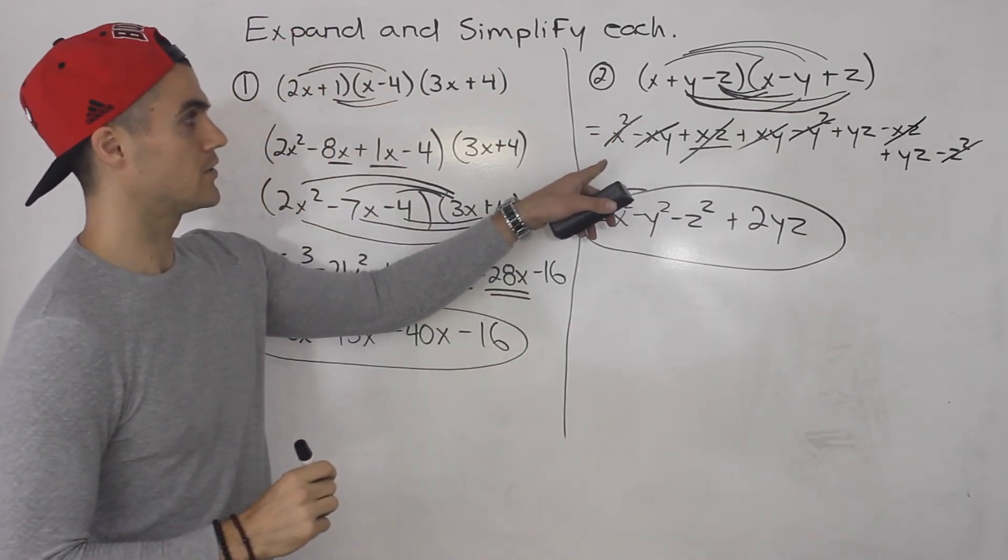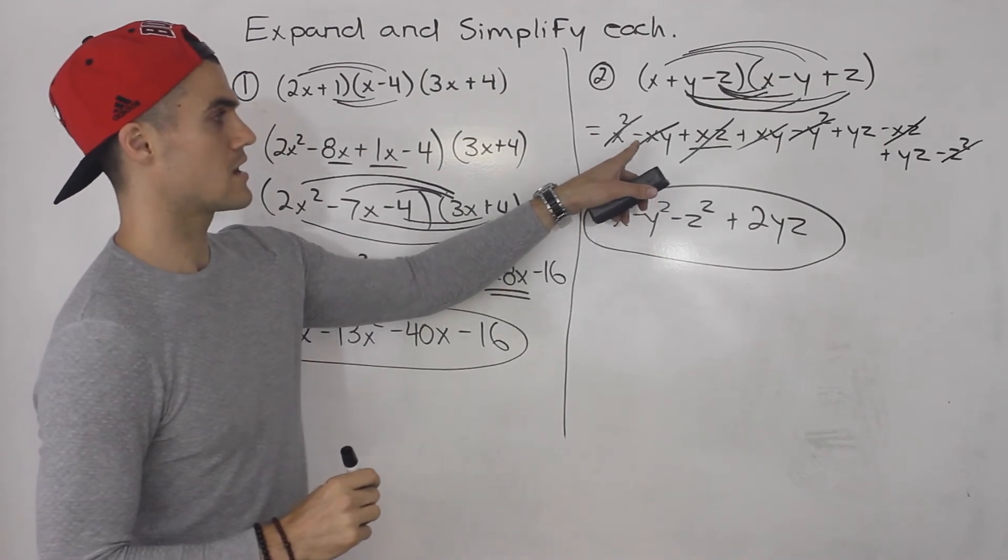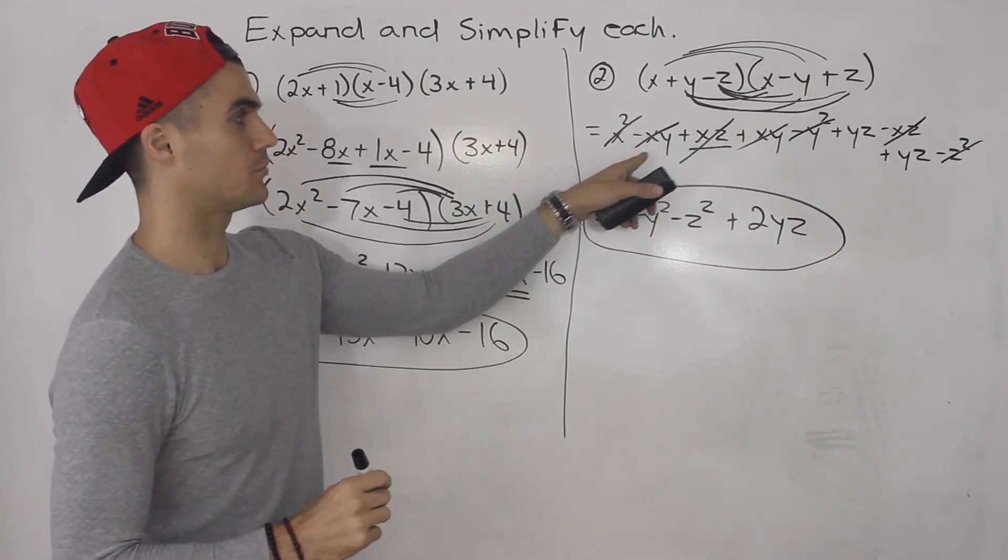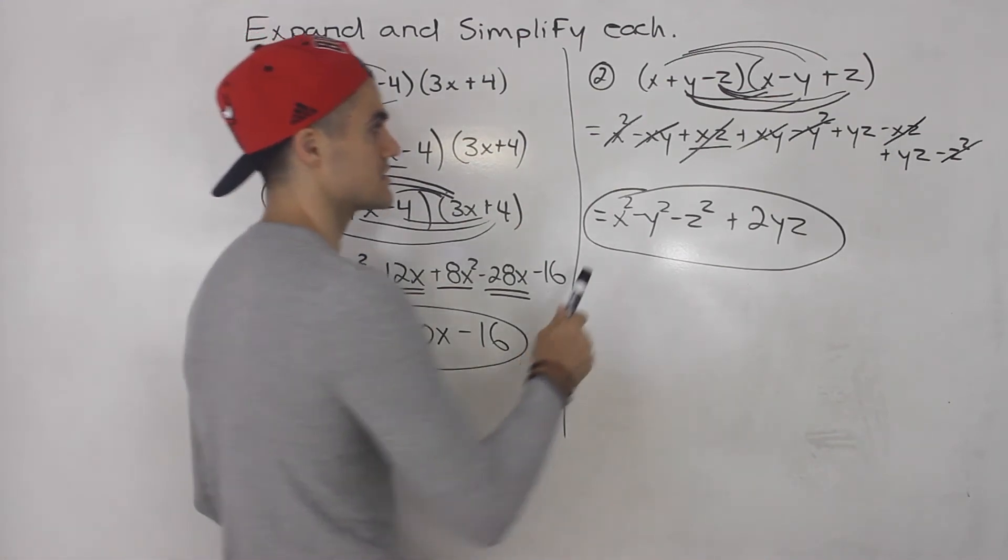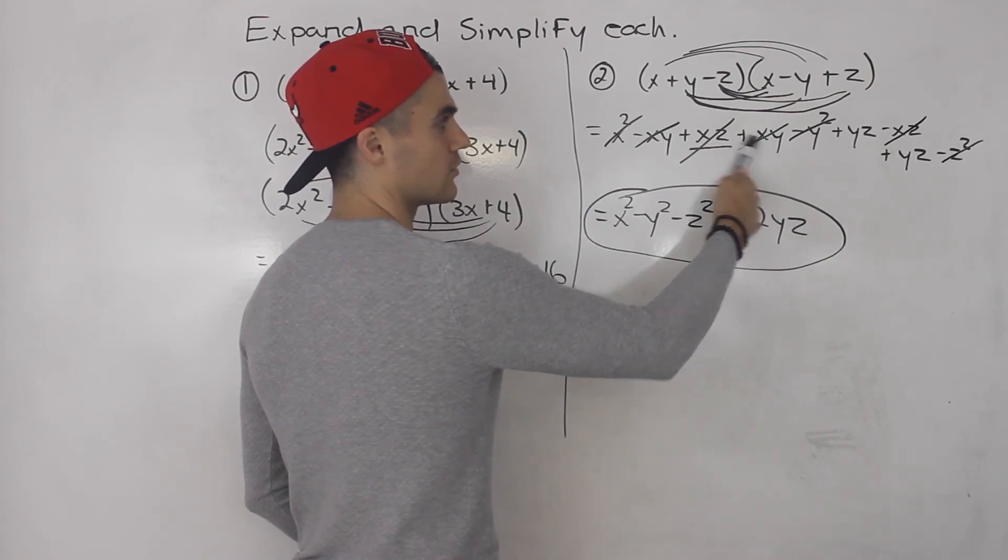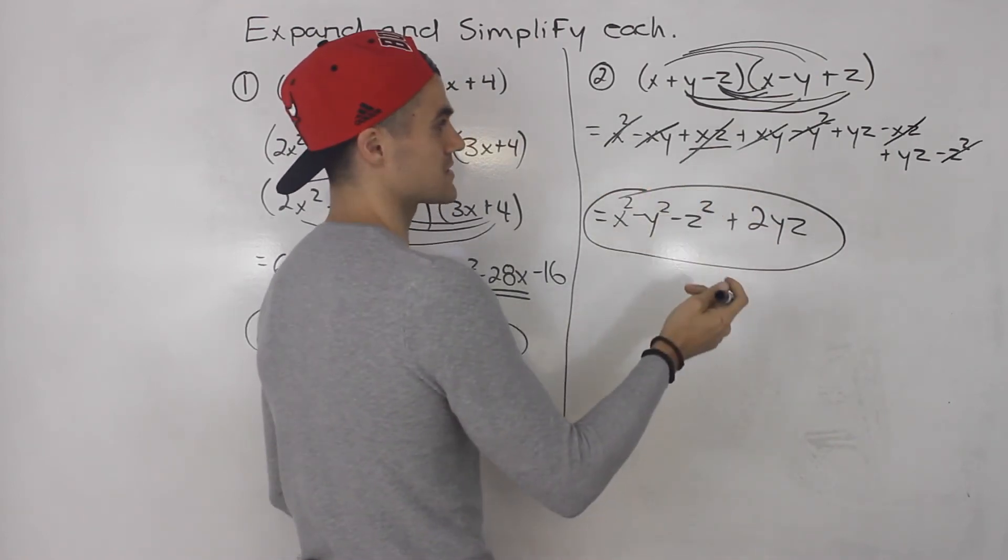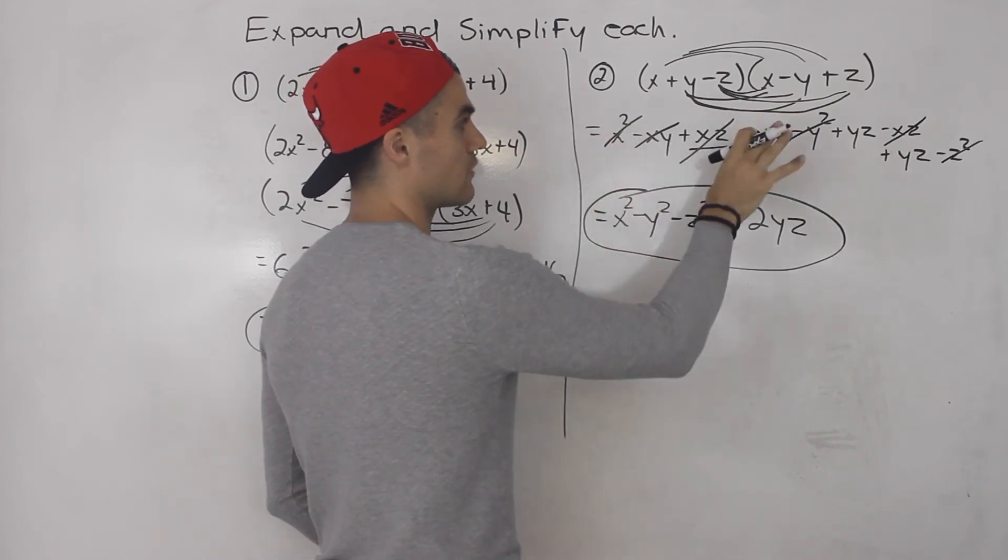So this one's a little tougher. And when you expand, I always like to keep the variables, if there's multiple variables, in alphabetical order. Because then it's sometimes harder to see. Because if I have xy here, and then yx over here, those are the same thing. But sometimes it's tougher to see if they're not in alphabetical order.